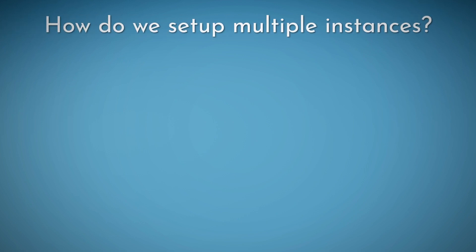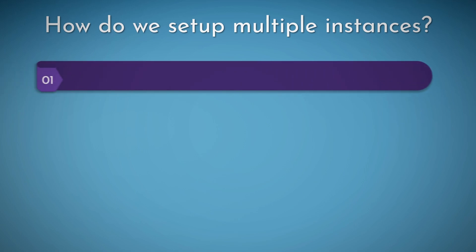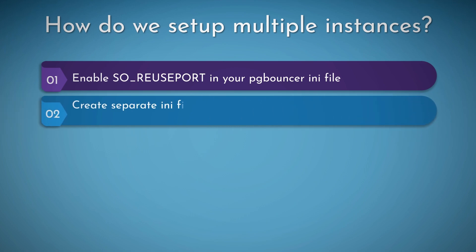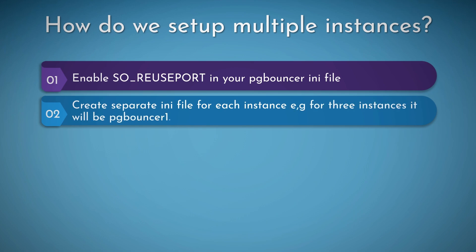How do you set up multiple instances? Here is a step-by-step procedure. First, in your INI file you need to enable soReusePort to one, and then you need to create a separate INI file for each instance. For three PG Bouncer instances you need pgbouncer1.ini, pgbouncer2.ini, and pgbouncer3.ini — three separate INI files for the three separate instances.